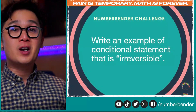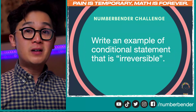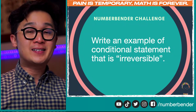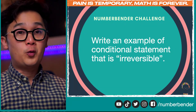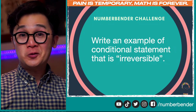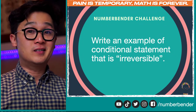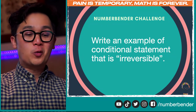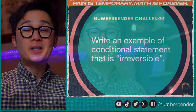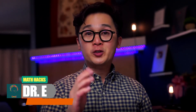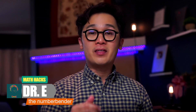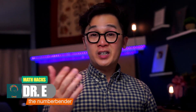That is going to be our number bender challenge of the day: how are you going to write an example of a conditional statement that is irreversible — which is another way of saying writing out a true biconditional statement. This is the lesson we have for biconditional statements. Make sure you understand the parts of your conditional statements to know when a biconditional statement is true and when it is not. This is Dr. E — see you again next time. Bye!